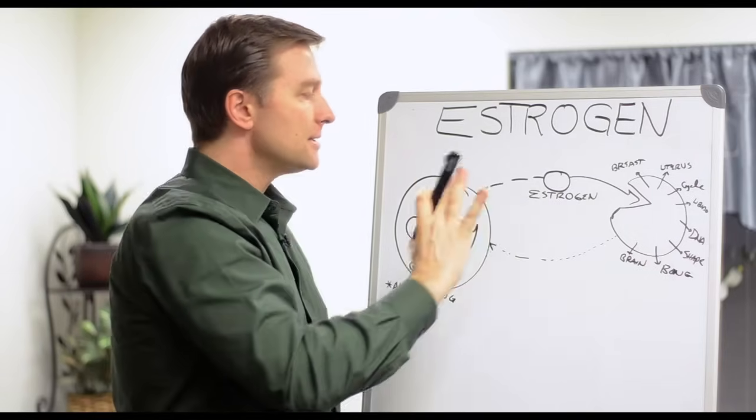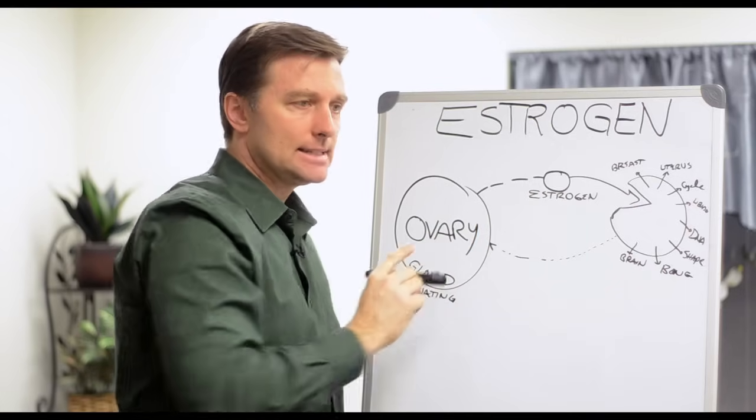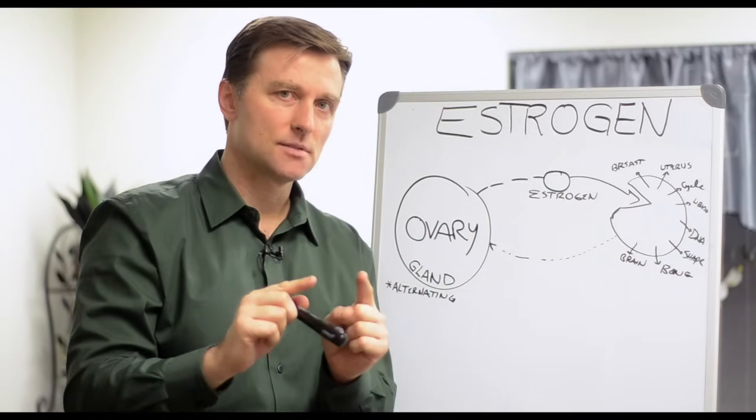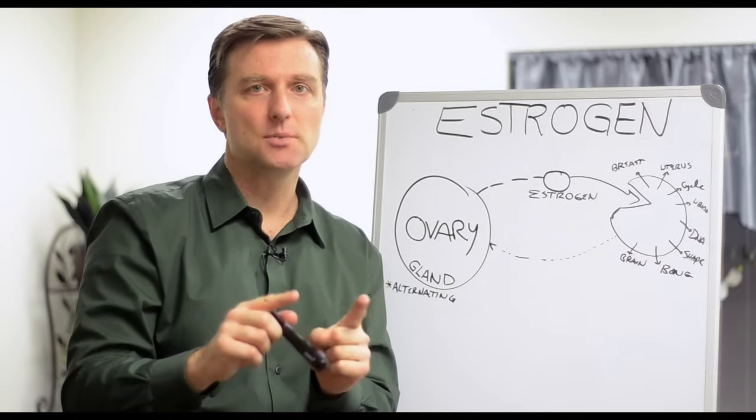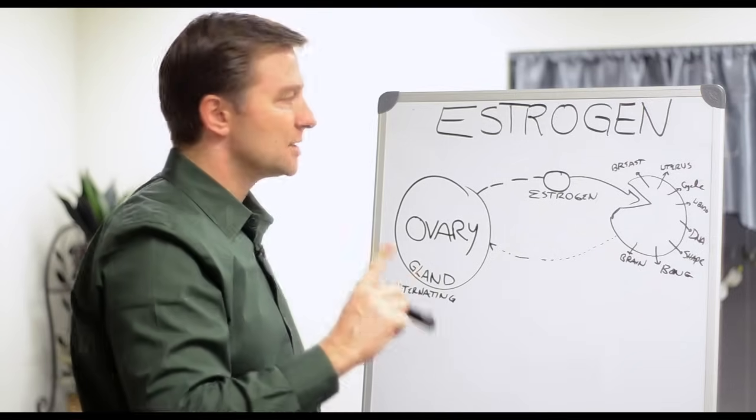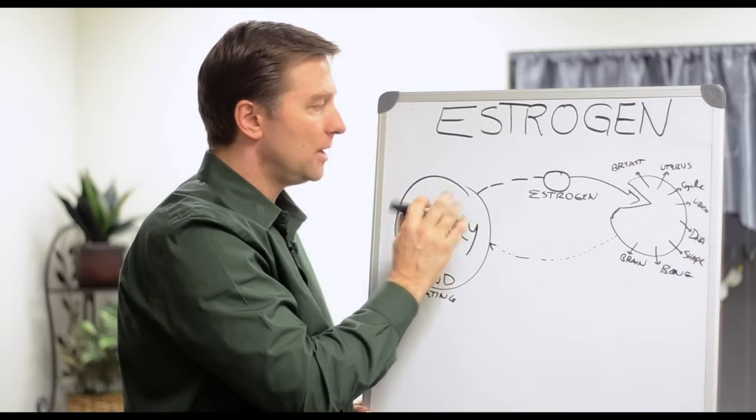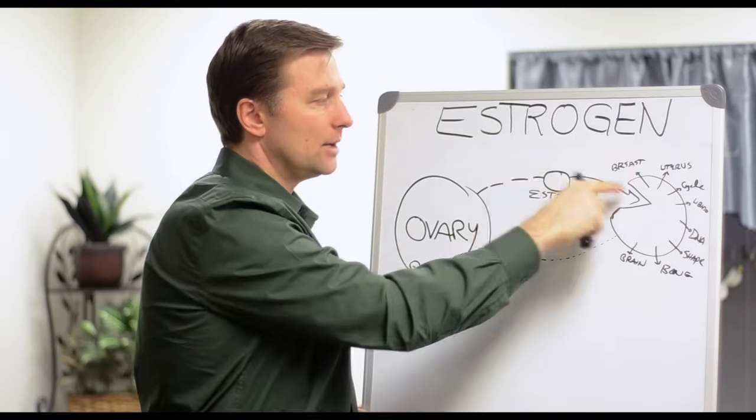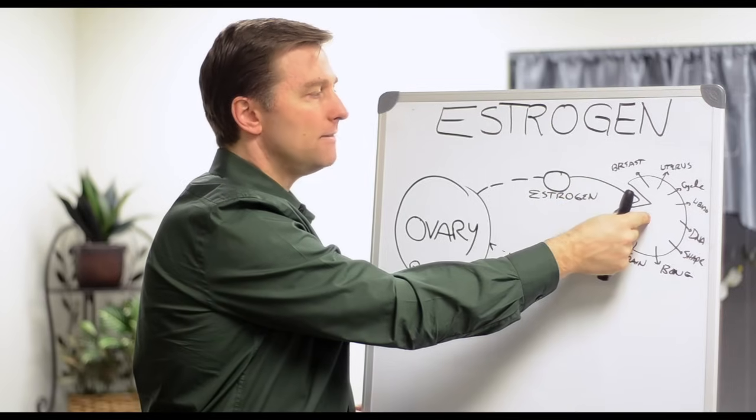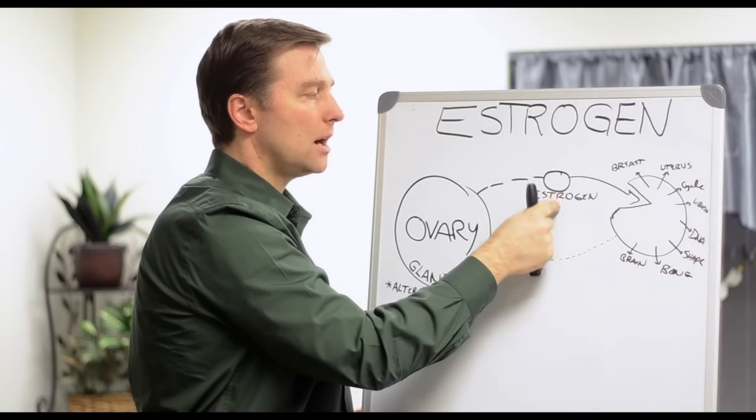So basically, we have the glands. The difference between a gland and an organ is glands make hormones. Organs don't, with the exception of the liver. The liver does make a hormone. But typically, glands make hormones sent through the blood and get received over here to create some effect. So hormones are communications.